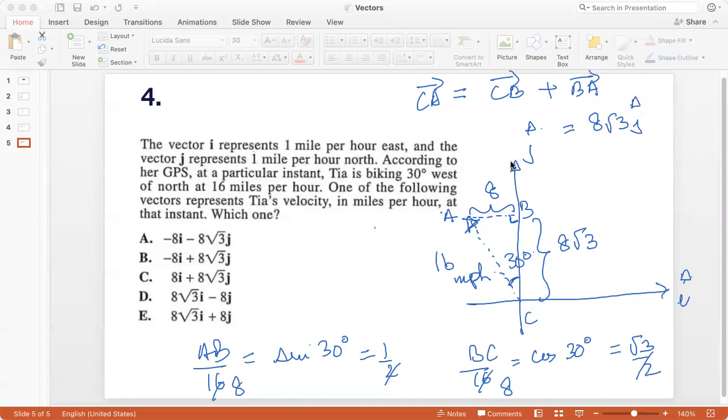Now, vector c b is going to be 8 root 3 j cap, because c b is in the direction of j cap, which is the unit vector multiplied by the measure. And vector b a, vector b a is opposite direction of i cap. So this would be minus 8 i cap, right? Because plus 8 i cap will be in this direction, but I need it in this direction. So it will be minus 8 i cap. So the velocity vector for Tia is minus 8 i cap plus 8 root 3 j cap, minus 8 i cap plus 8 root 3 j cap, option B.